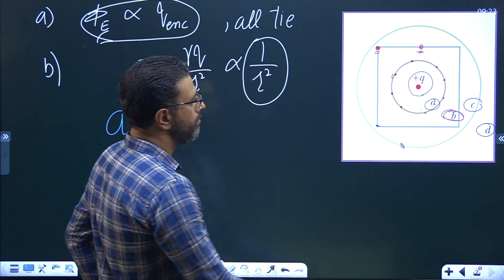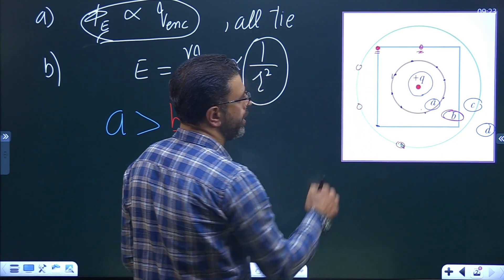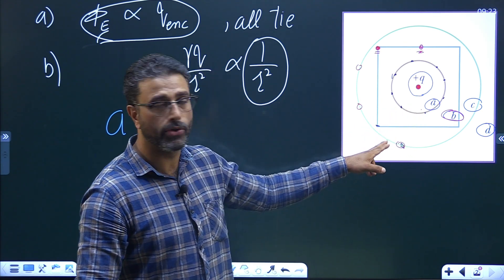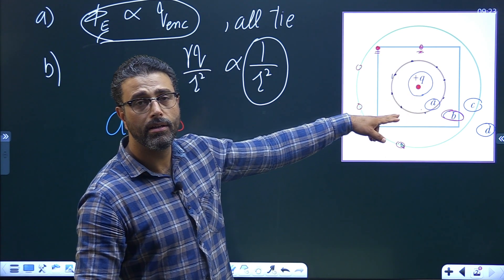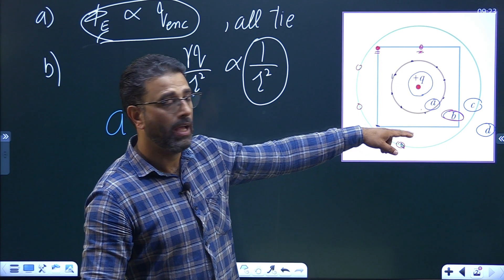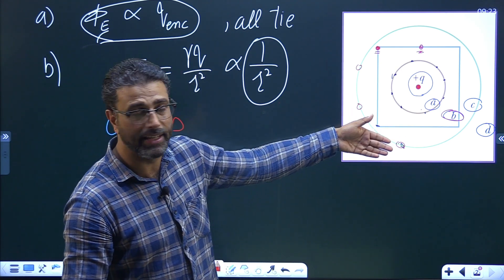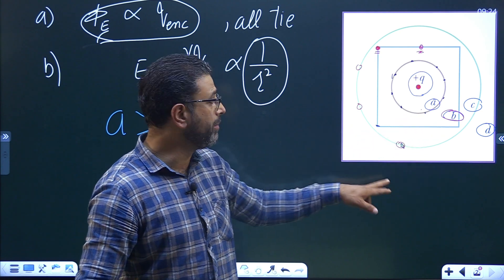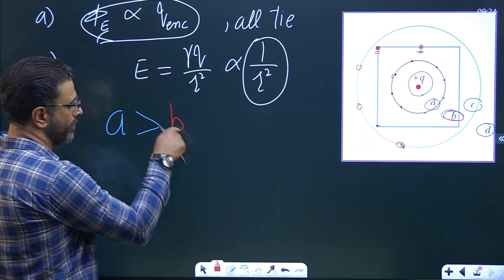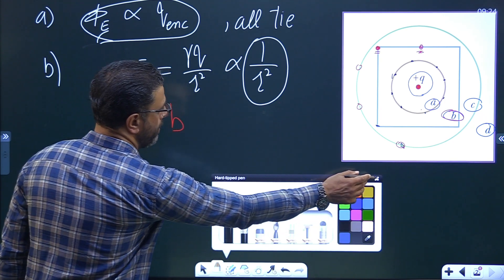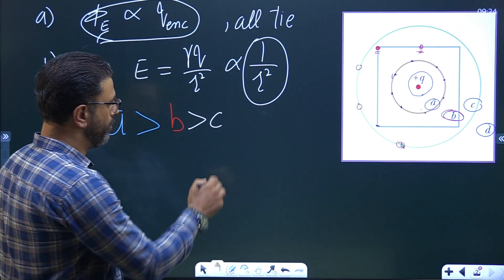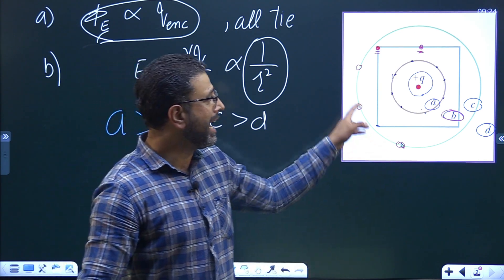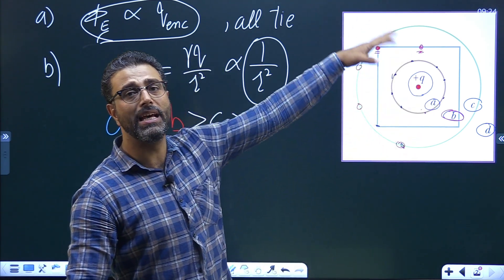Now consider surface C. Any point on C is at a larger distance compared to A and B, but at a smaller distance than D. So the field at any point on C will be less than A and B but greater than D. Therefore the ranking is: field at any point on A is greatest, then B, then C, then D.